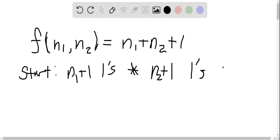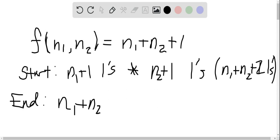And notice that we want to end up with an expression which has n1 + n2 + 2 ones with no asterisk.